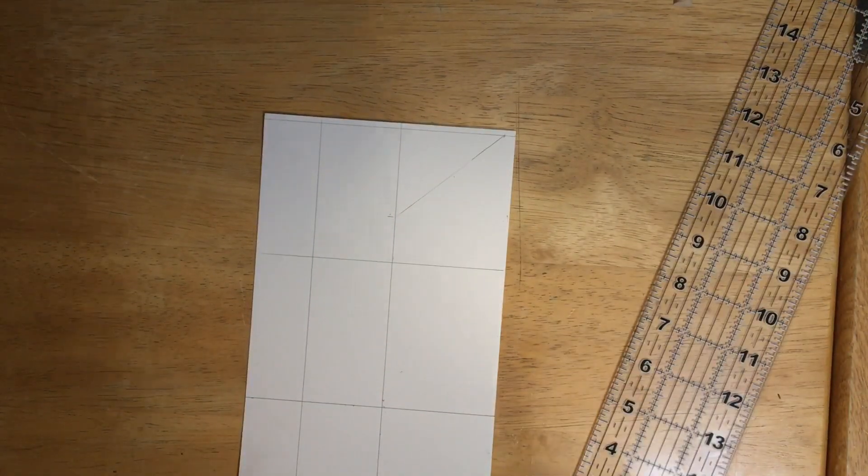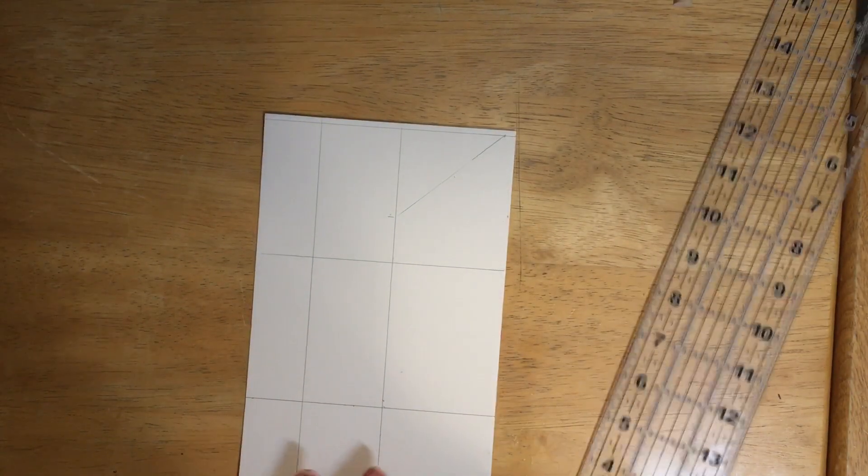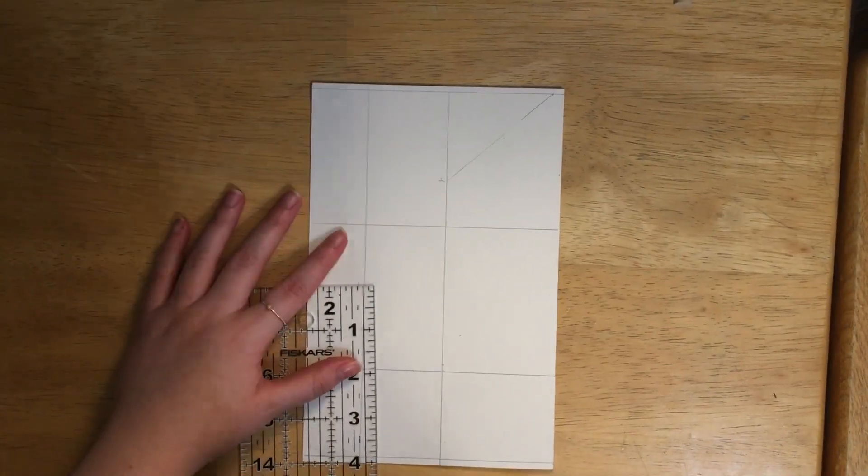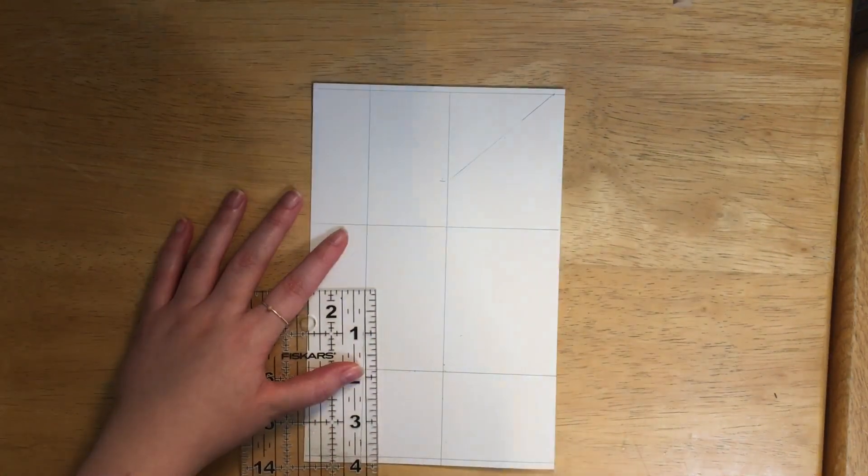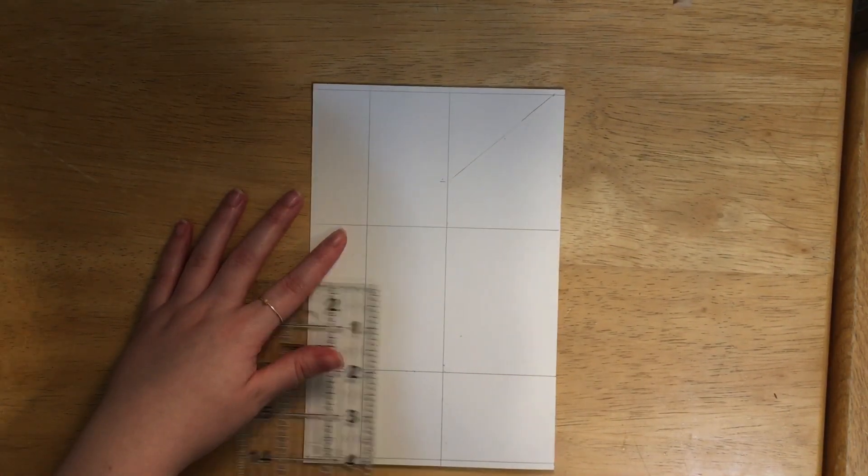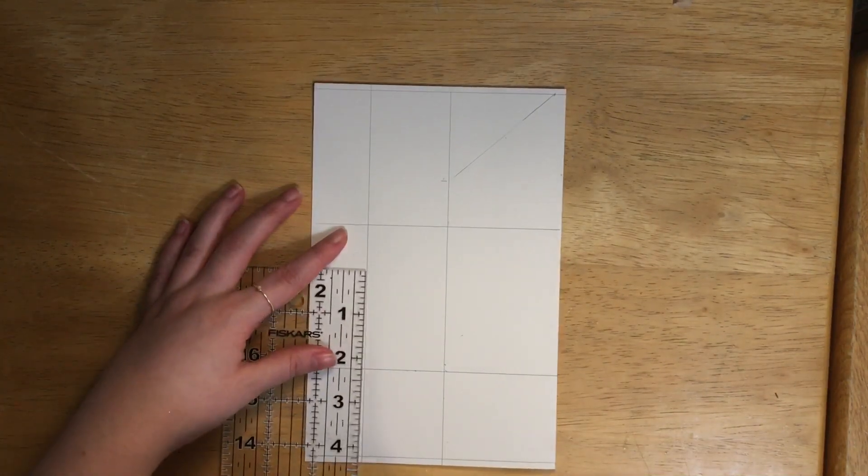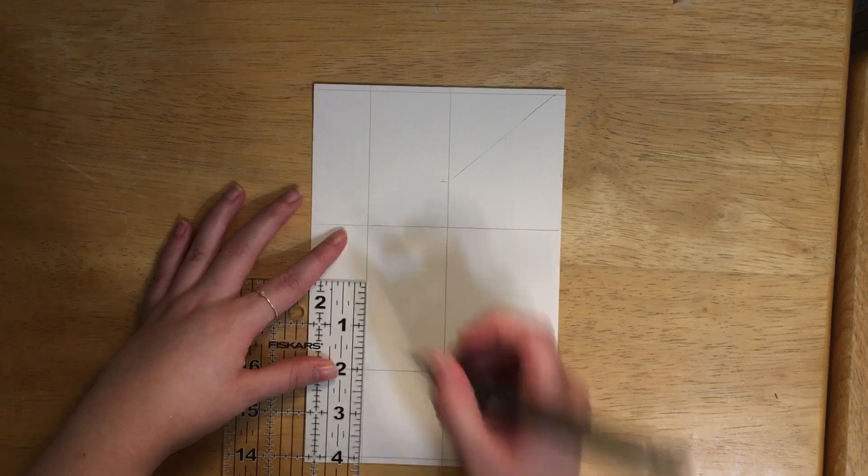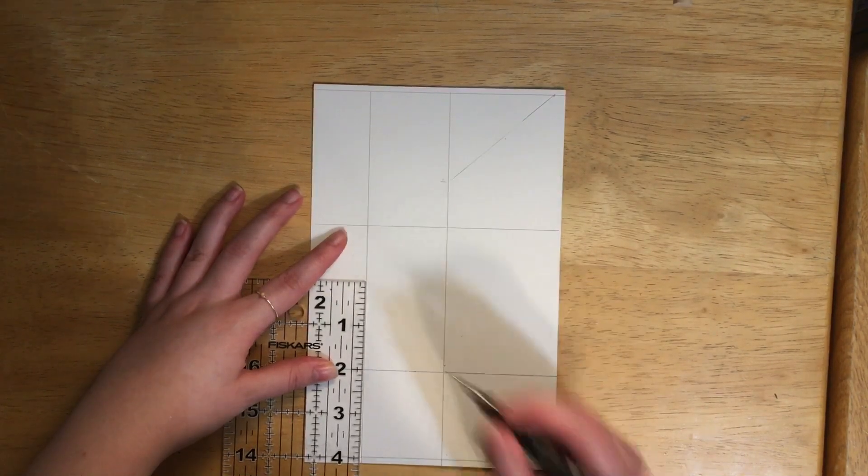So then the next part is we're going to come way over here. I'm going to measure up two inches, is that correct? Yeah, that's correct. Okay let's go ahead and do that, at two inches. And then so we're going to make a line there.